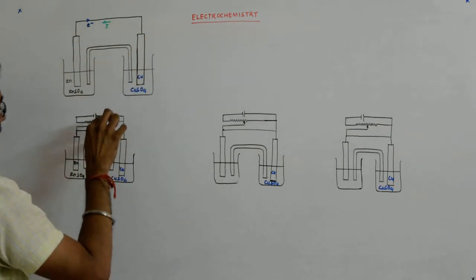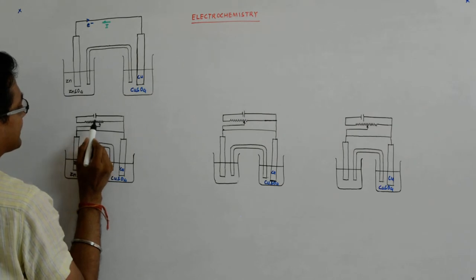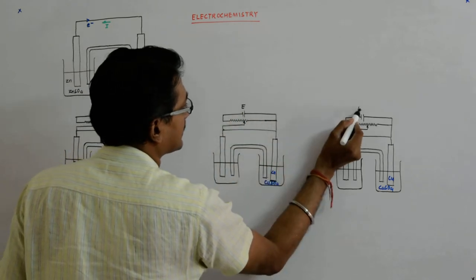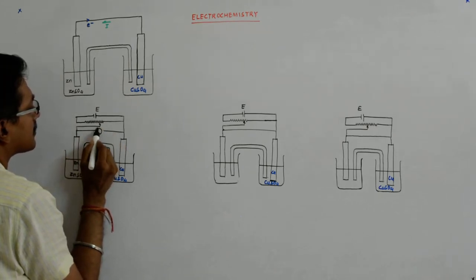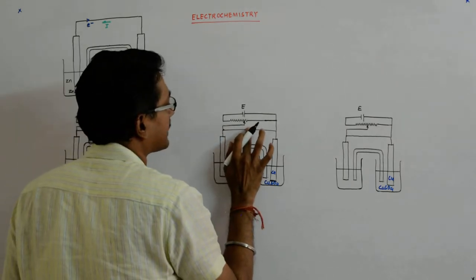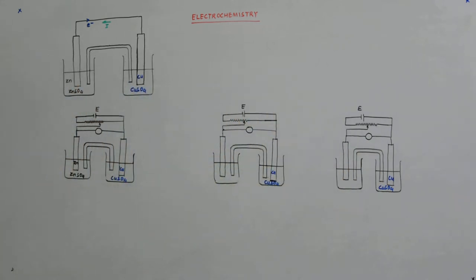What I do is try to flow a current in the opposite direction. This is a cell, and I try to apply an EMF like this. We try to see what happens, and we should be putting a galvanometer in this wire. Then what should happen? This is a potentiometer.